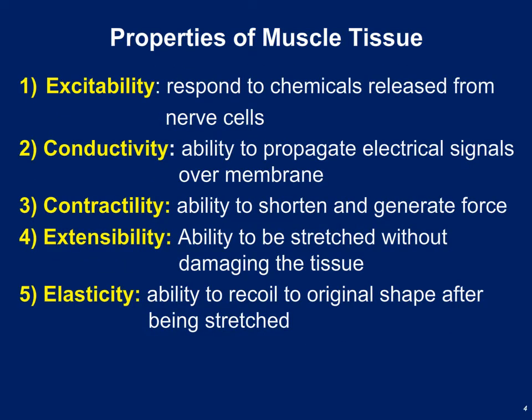Muscle tissue, particularly skeletal muscle, has some unique properties. These include excitability — it's responsive to outside stimulus, specifically chemical stimulus in the form of neurotransmitters. Muscle tissue can also conduct electrical activity. And skeletal muscle fibers are contractile — they can forcefully shorten, and we can use that forceful shortening to do work.